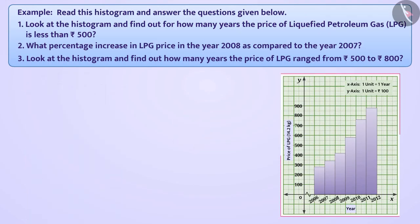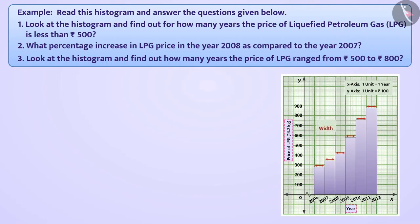The histogram shown here displays the change in the price of LPG over different years, in which the x-axis represents years and the y-axis represents the price of LPG per 14.2 kilograms. Here the width of each class interval is the same, that is one year, and the scale of the y-axis is one unit equal to 100 rupees.